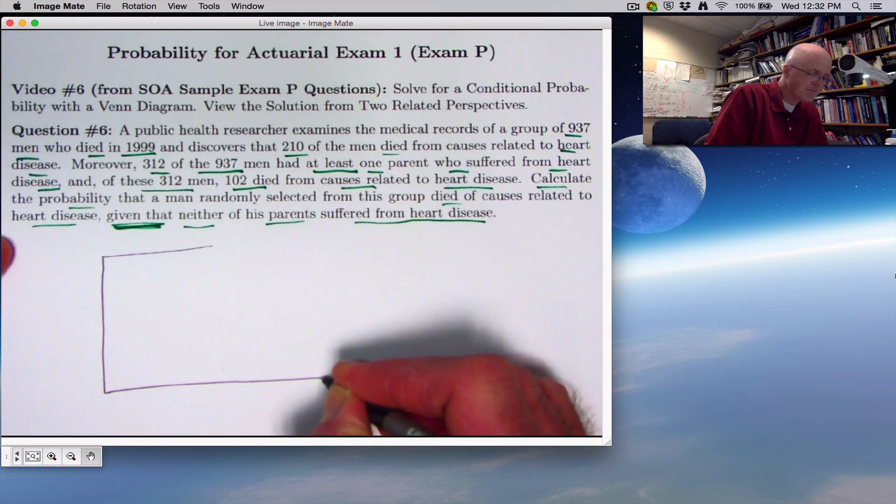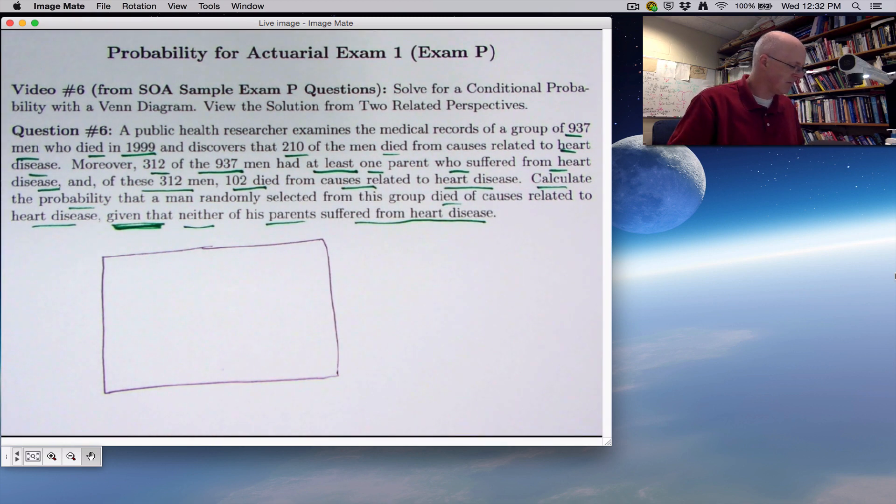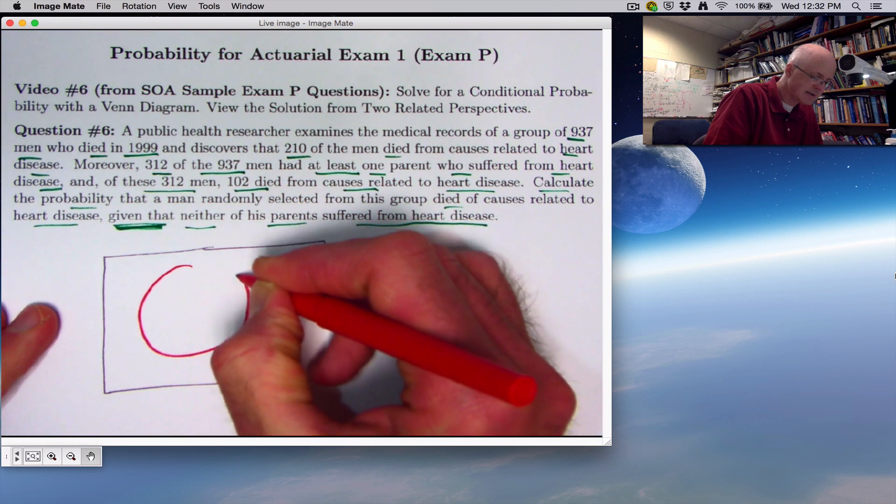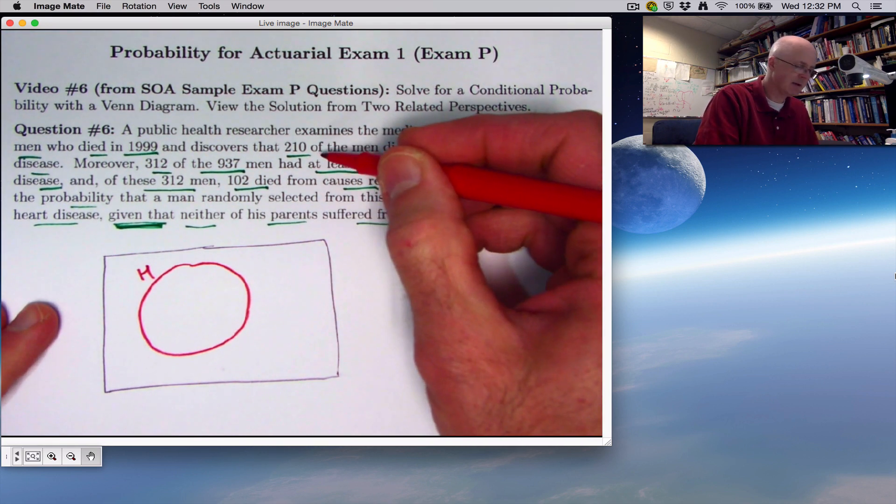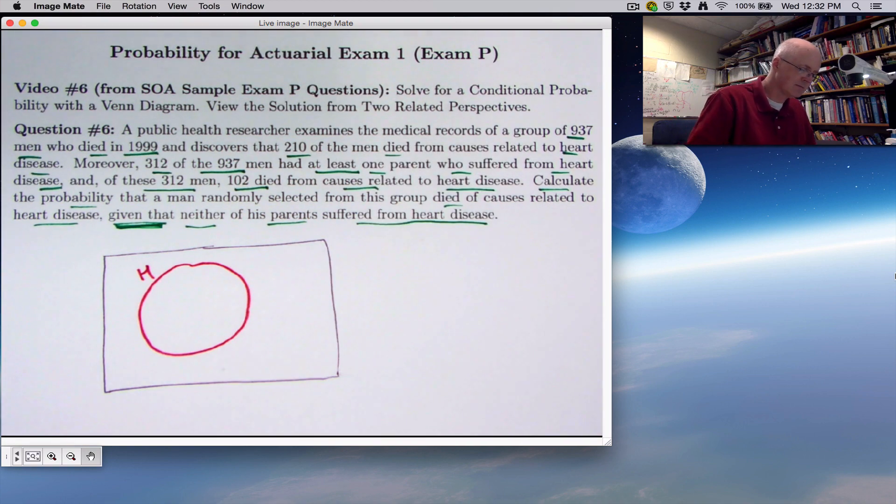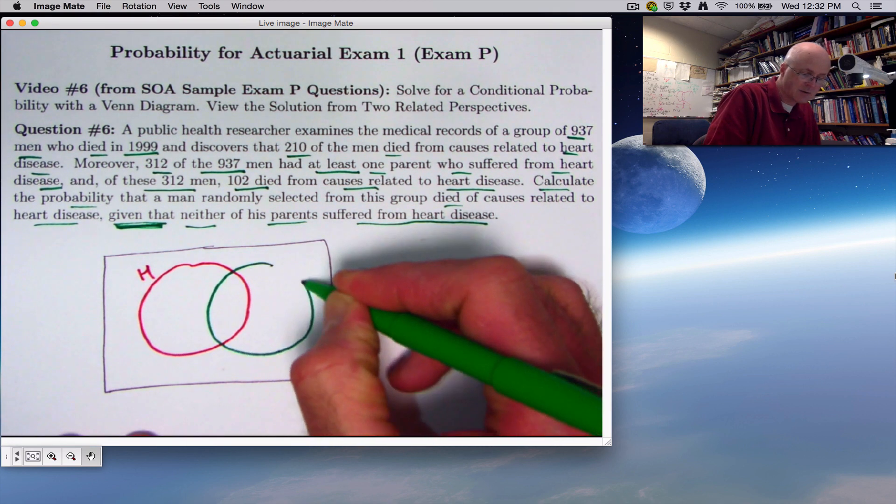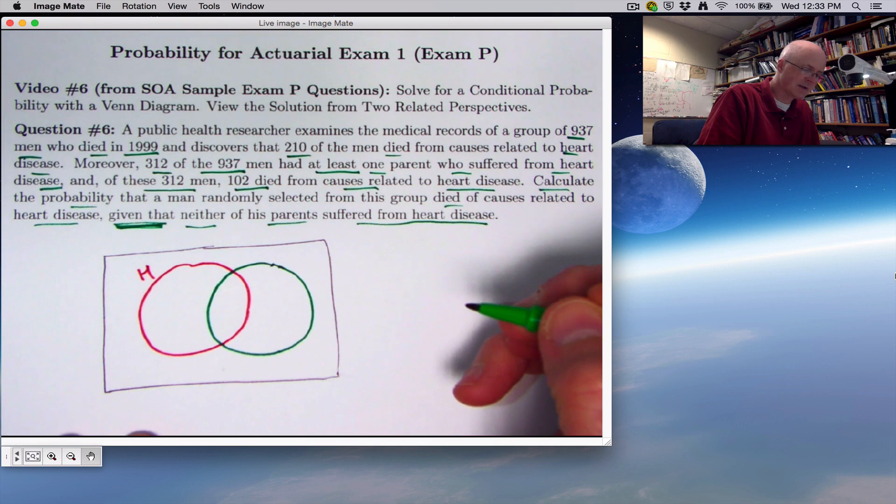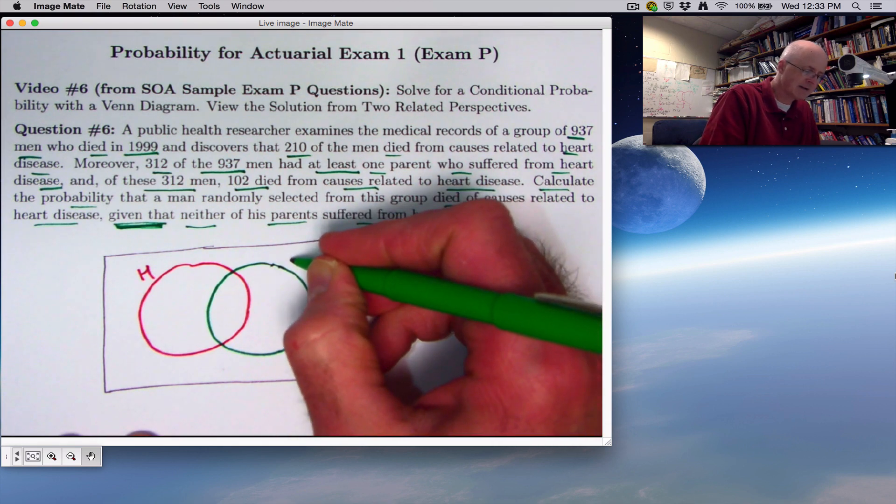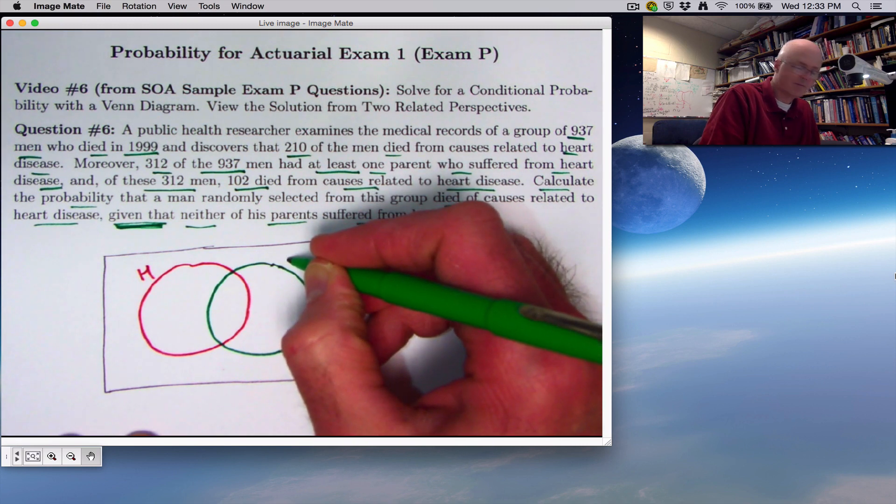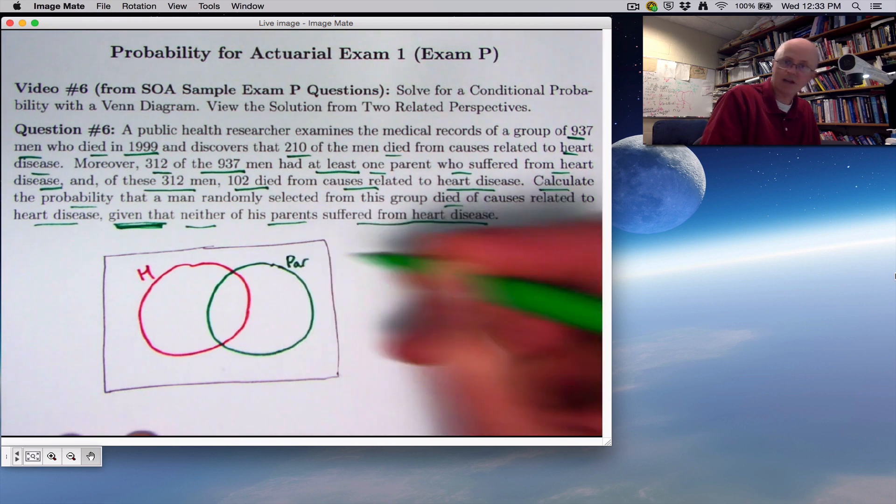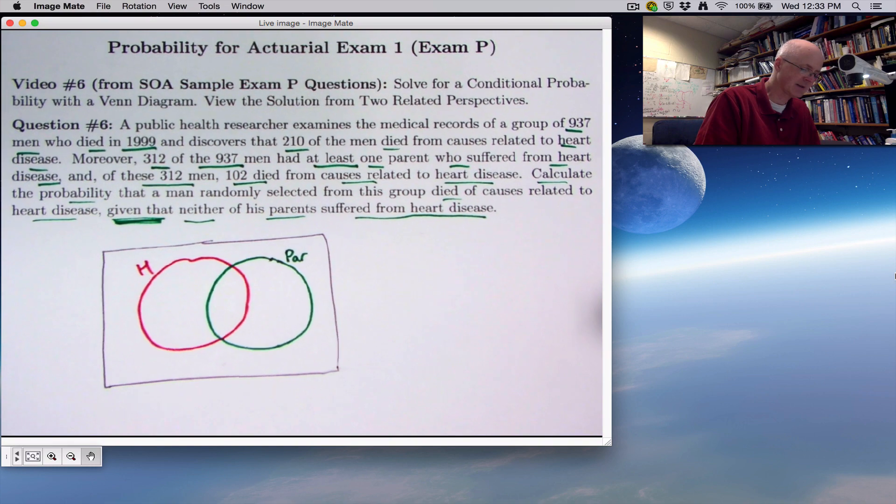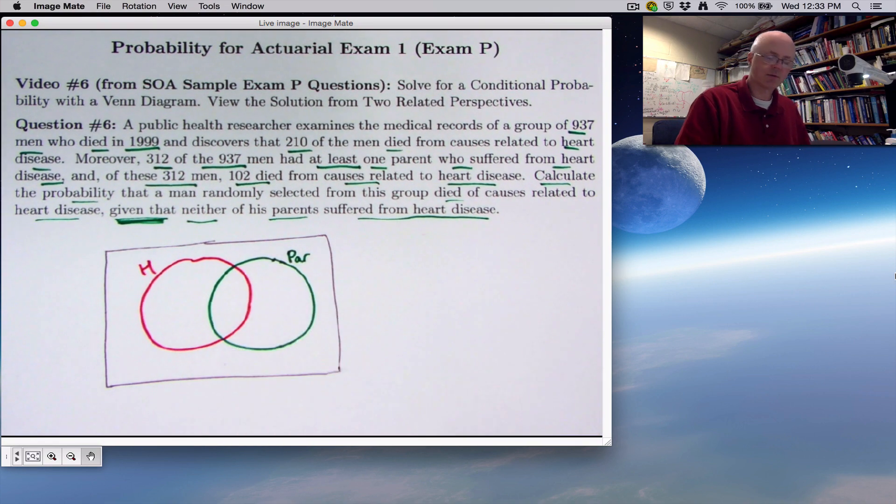So once again, we draw a Venn diagram. Imagine the box representing all 937 men. We've got one circle representing those who died from heart disease - there would be 210 of the men in there. And another circle. Again, all these men died in 1999, so those outside the red circle still died, just not from heart disease. The green circle here represents those who had a genetic link, at least one parent suffering from heart disease. I don't want to call it P because I want to reserve P for probability. I could call it PAR for parent. And we want to fill in numbers in these four different regions to help us solve the problem.